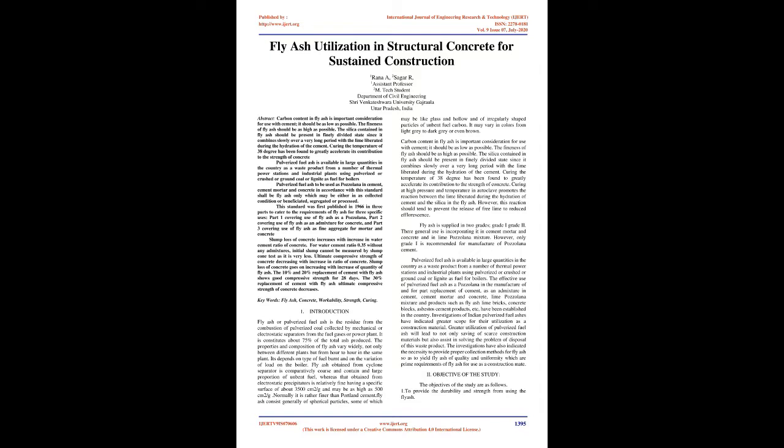Slump loss of concrete increases with increase in water cement ratio. For a water cement ratio of 0.35 without any admixtures, initial slump cannot be measured by slump cone test as it is very less. Ultimate compressive strength of concrete decreases with increase in water cement ratio. Slump loss of concrete goes on increasing with increase in quantity of fly ash. The 10% and 20% replacement of cement with fly ash shows good compressive strength for 28 days, while the 30% replacement of cement with fly ash causes the ultimate compressive strength of concrete to decrease.